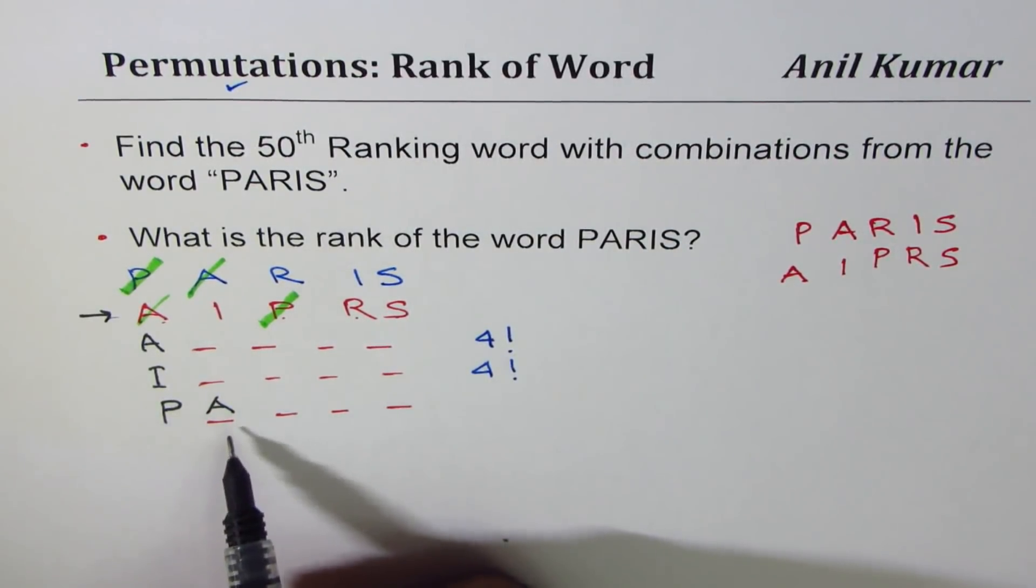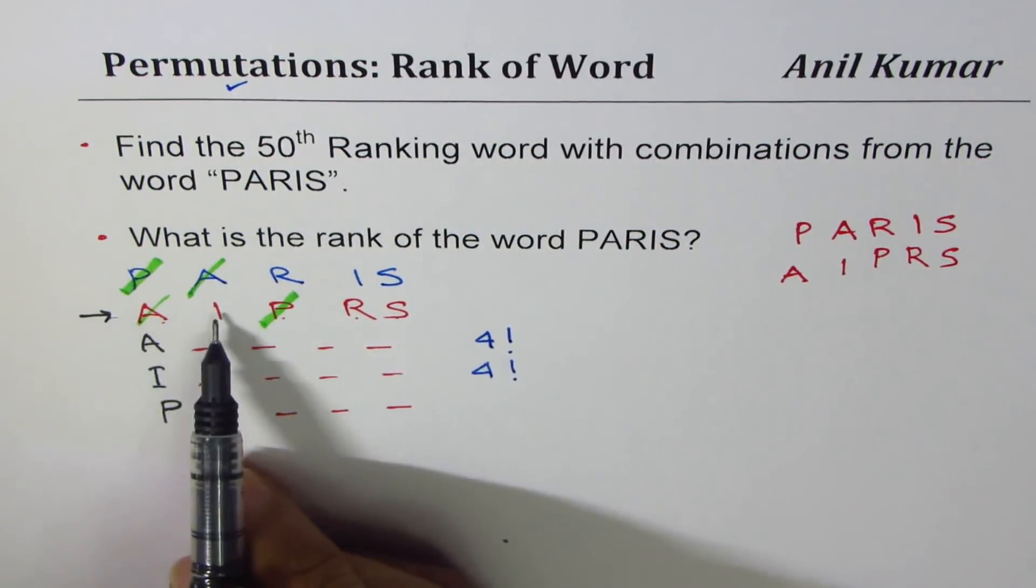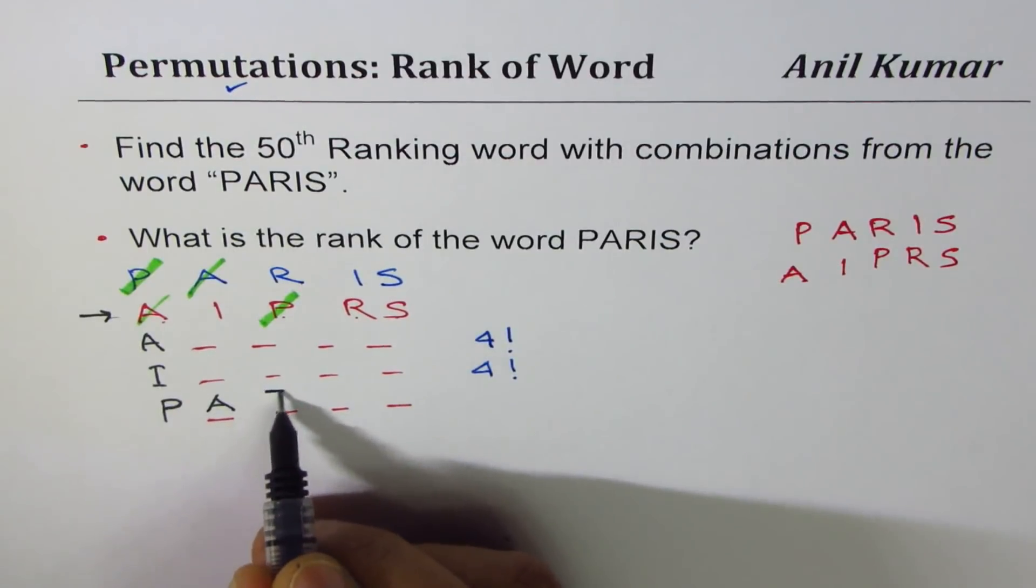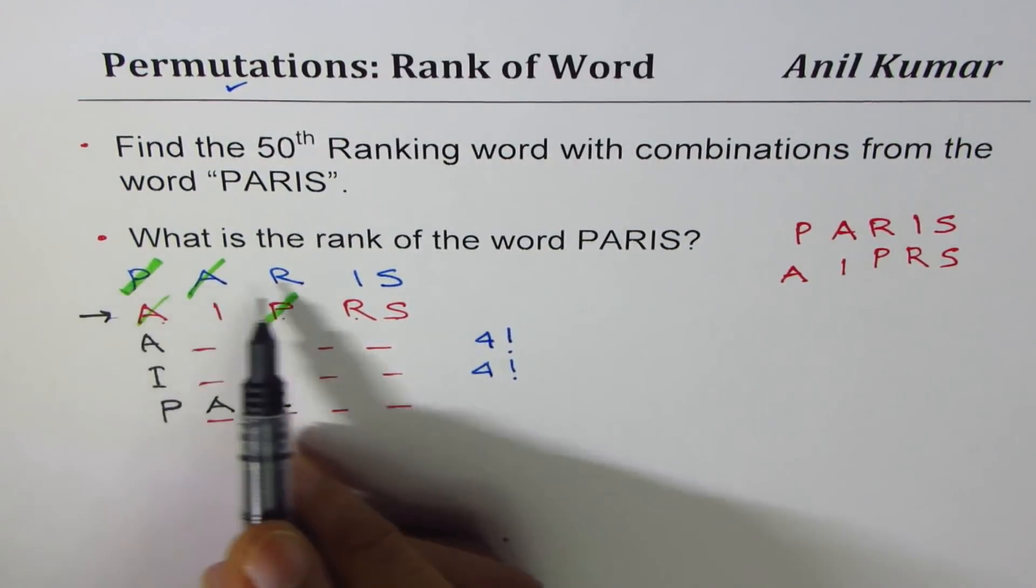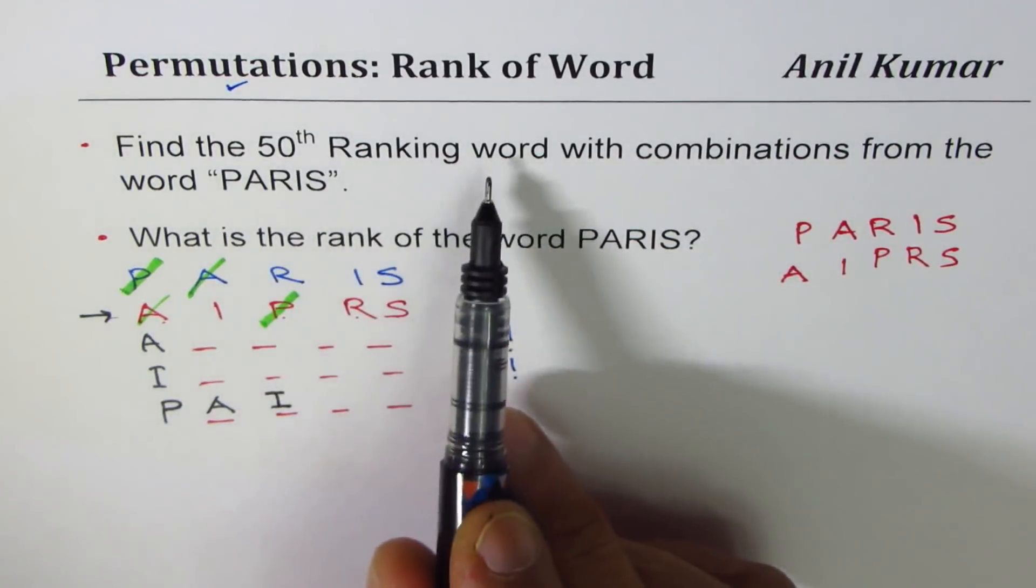Now, next word here in the list, we have put P, A. Next is I. If I put I, it will come before Paris. It was R for us. At this time, since we know we are looking for the 50th ranking word...